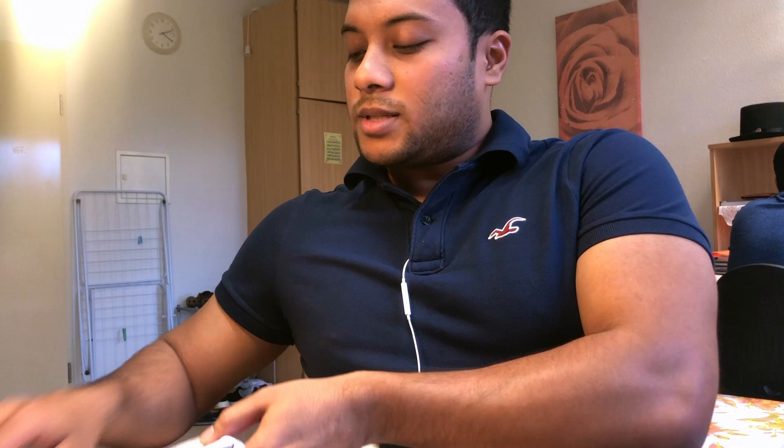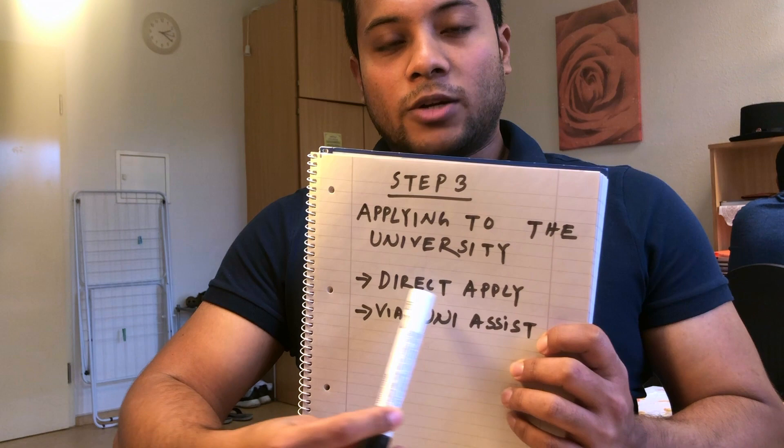Step number 3: applying to the university. Select the course. Step number 4, and then we will check the course. Select the course from among our courses. This is the name of the Enrollment Form, which is the Apply Application Form. This is the form to fill up.